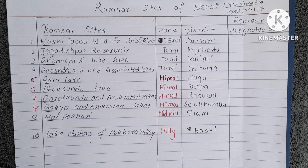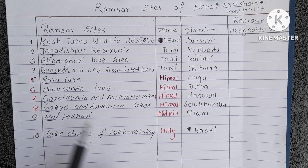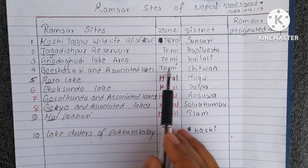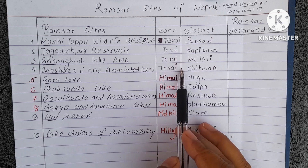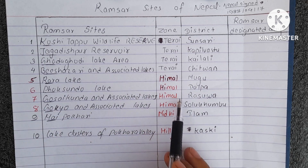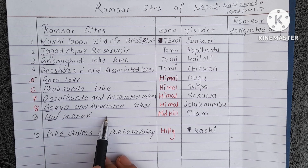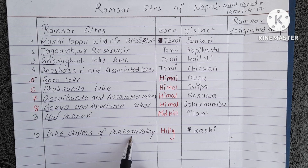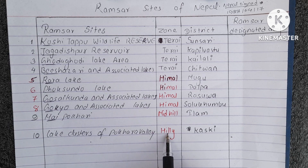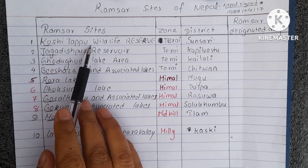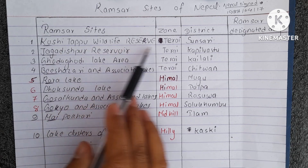Now let's look at which zone each site is in. There are 4 Terai sites, then 5 Himal (mountain) sites, and the last one is in Pokhara Valley (Gandaki zone). Now let's look at which districts they are in. Kositapu Wildlife Reserve is in Sunsari district.